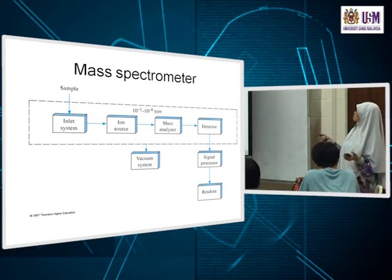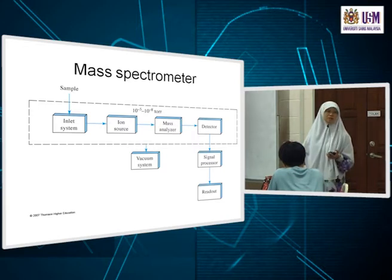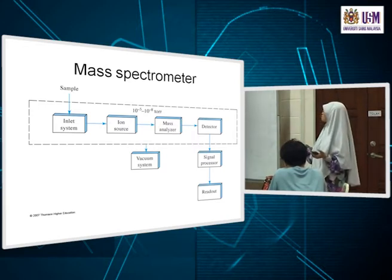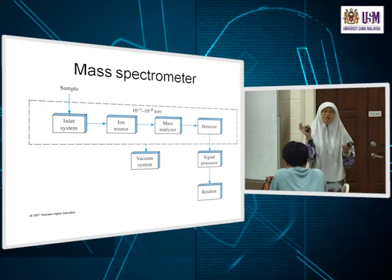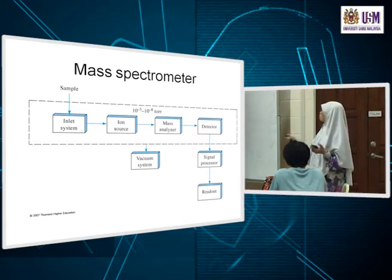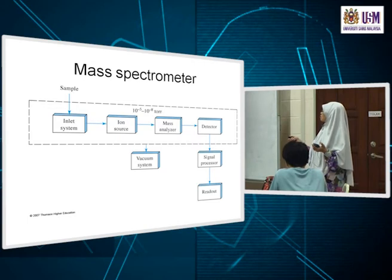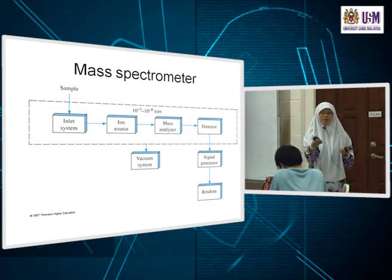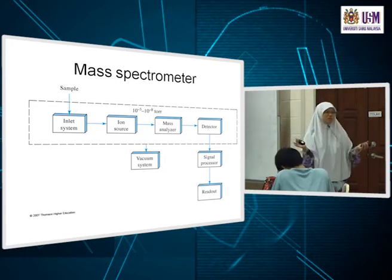The main components of a mass spectrometer: you must have an inlet system for how you introduce your sample, and if you notice it's all in a vacuum — low pressure — because you cannot have too many ions. It's going to be difficult to separate and detect them at high pressure. You're talking about pressures of 10⁻⁵ to 10⁻⁸ torr, not like AAS where the plasma works at atmospheric pressure.